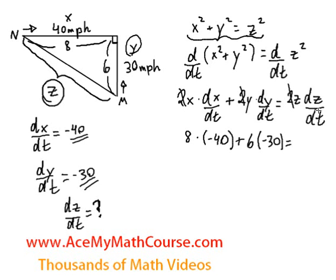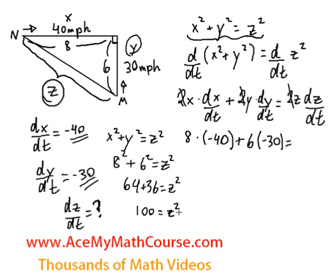Finally, we have z times dz/dt. But now what is z? We can actually calculate it through Pythagorean. So x squared plus y squared equals z squared. That's 8 squared plus 6 squared equals z squared. 64 plus 36 is equal to 100. You can take the square root of both sides and z is just 10.